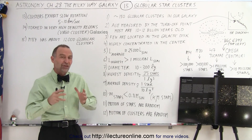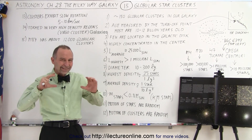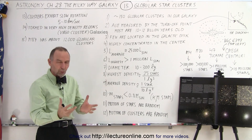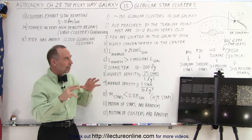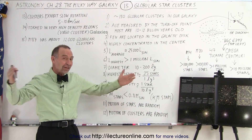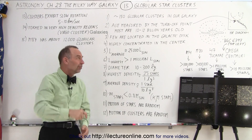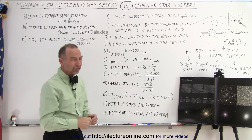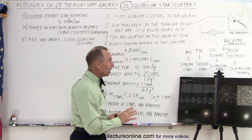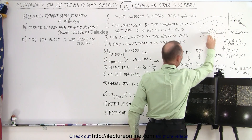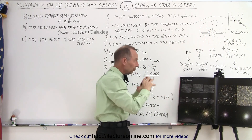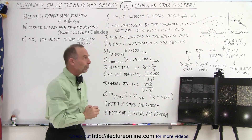First of all, globular clusters are not confined to the disk and the bulge of the galaxy alone. They basically form like a swarm of bees around the galaxy — a spherical region that reaches to the far end of the disk and goes about the same distance in the north-south direction. They are concentrated towards the center, with more of them found there and fewer further out, but they still form that spherical region.